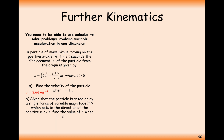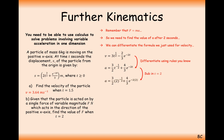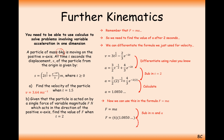For part b, we need f equals ma. We already have velocity, so we differentiate again to get acceleration. Multiplying the power to the front and reducing by 1 for the first term, and the e term differentiates to itself with the minus 2 multiplied to the front, giving 3/2 t to the power minus 1.5 plus 4 over 3 e to the minus 2t. Plugging in t equals 2 gives acceleration of approximately 1.0850 meters per second squared. With mass 6 kilograms, force equals 6 times 1.0850 giving 6.51 newtons to three significant figures.